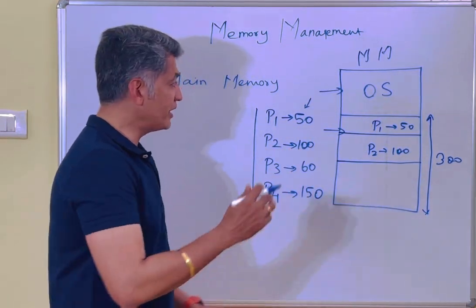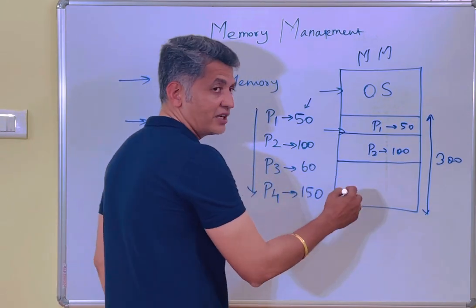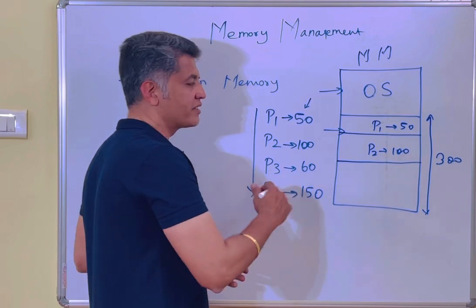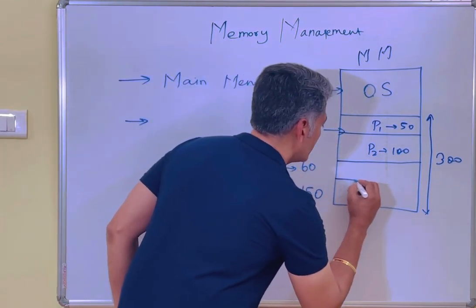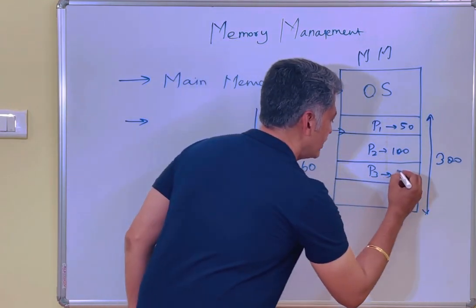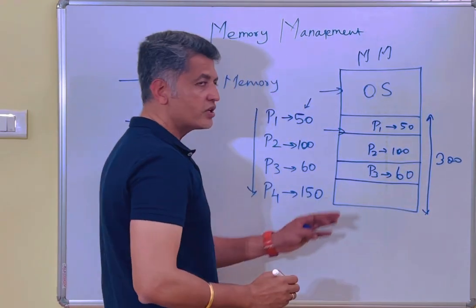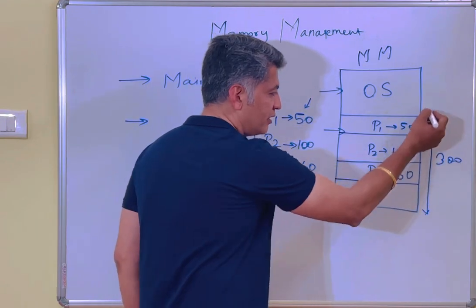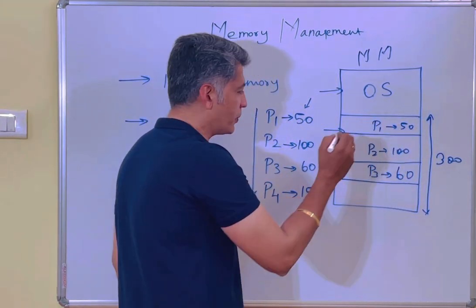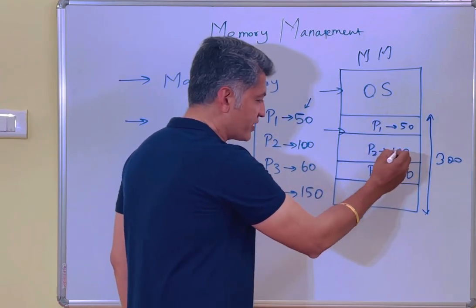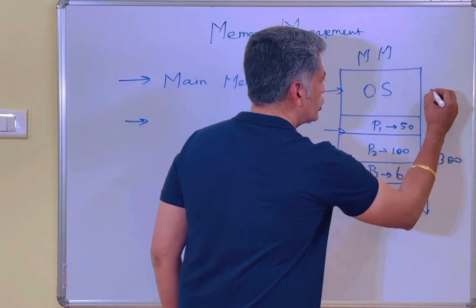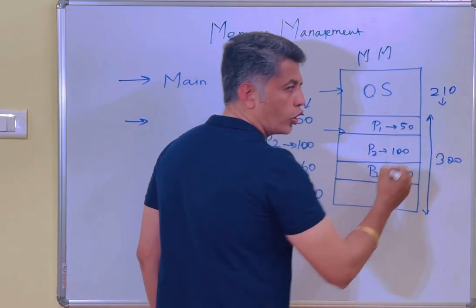Now process 3 is coming. The operating system verifies whether space is available — yes, the space is there — so operating system allows it. Process 3 also gets execution, occupying 60 locations. So process 1 occupies 50, process 2 occupies 100, process 3 occupies 60 — a total of 210 locations are occupied out of 300.